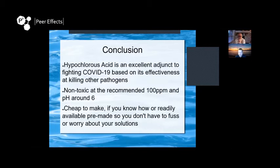Conclusion: hypochlorous acid is an excellent adjunct to fighting COVID-19 based on its effectiveness at killing other pathogens. It's non-toxic at the recommended 100 ppm and pH around 6. It's cheap to make if you know how, or readily available pre-made so you don't have to fuss around.